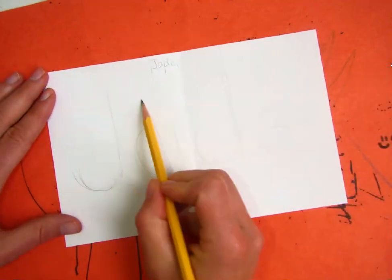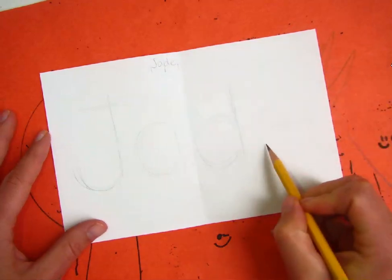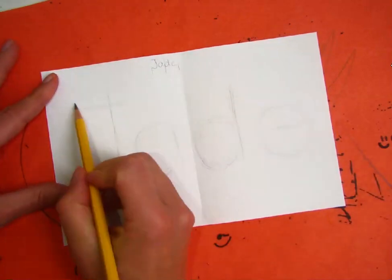I'm going to keep doing this, erasing and fixing until everything looks nice, balanced, and centered. Once you have your stick letters where you want them, these are going to act like a little skeleton.